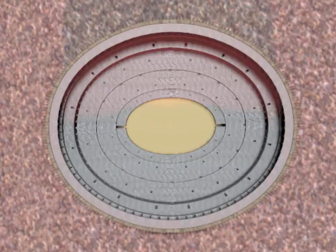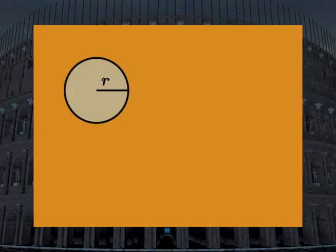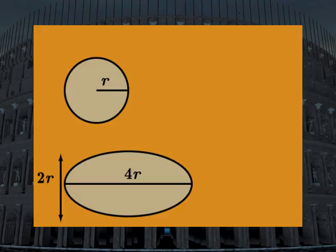For example, here is a circle of radius r, and here is an ellipse of width 2r and length 4r. The area of the circle is pi r squared, while the area of the ellipse is 2 pi r squared, twice the area of the circle.